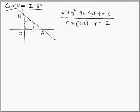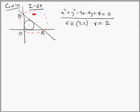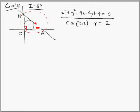We have to find the locus of the circumcenter of triangle OAB. The circumcircle of triangle OAB — we need to find the locus of its center. Since the angle at O is 90°, AB is the diameter of the circumcircle, because the angle in a semicircle is a right angle. So we have to find the locus of the midpoint of AB.